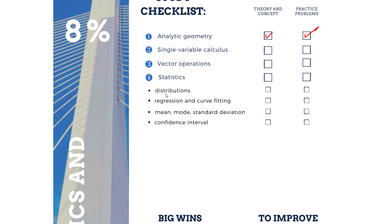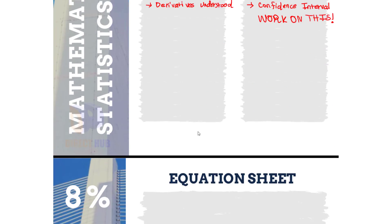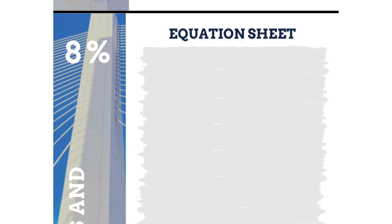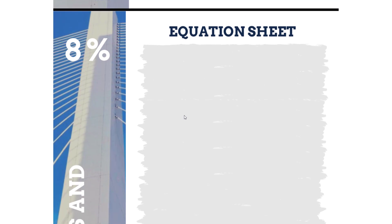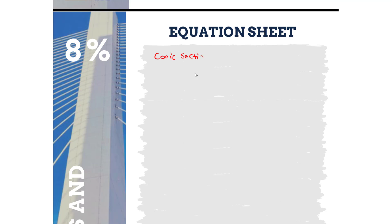For example, confidence intervals under statistics. Then on the next page is an equation sheet. Here you can write any equations that are not in the reference handbook, or ones that are in the handbook that you just want to have handy. You want to refer to this equation sheet and write down any equations you feel you need to know and essentially memorize to save time on the actual FE exam. For example, let's say we're looking at conic sections for analytic geometry — you can write equations and notes.